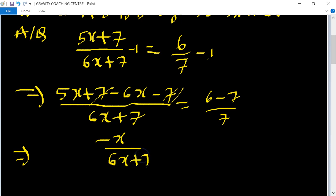This implies that 7x equals 6x plus 7. Then 7x minus 6x equals 7.